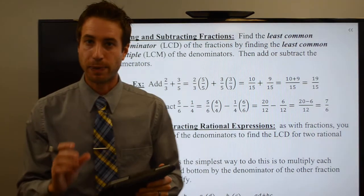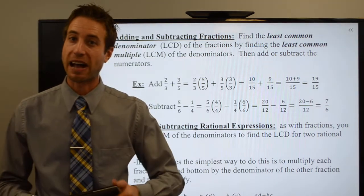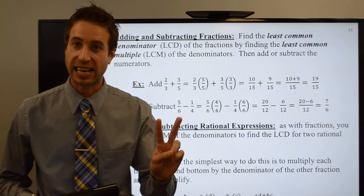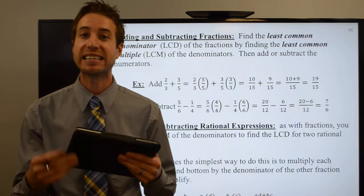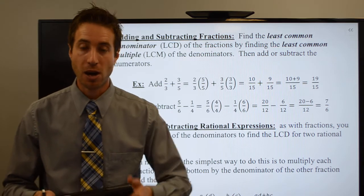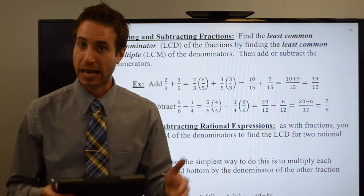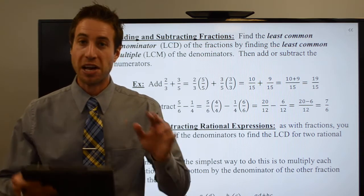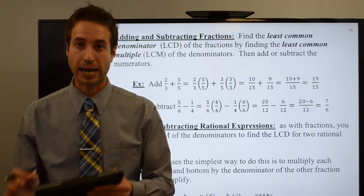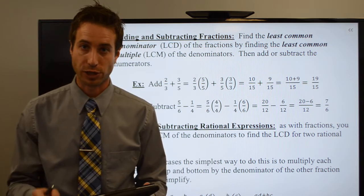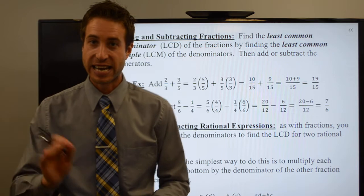Welcome to this page of the notes. Time for our second objective. The first objective was to find the LCM of polynomials — both monomials and polynomials. The second objective is to add and subtract rational expressions, which we will do here.